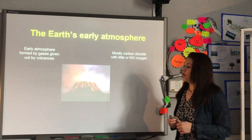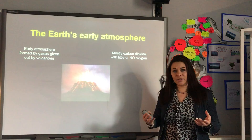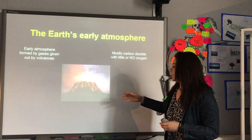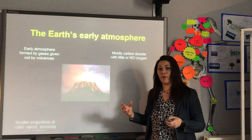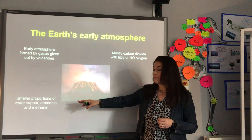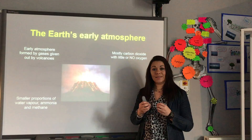The Earth's atmosphere was formed by volcanoes. Most of the gases given off were carbon dioxide, but there was very little oxygen. The oxygen — the small amounts that were there — we believe came from water vapour (H₂O) given off by volcanoes. Smaller proportions of water vapour, ammonia, and methane were also present.